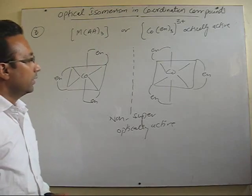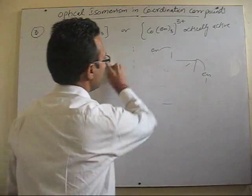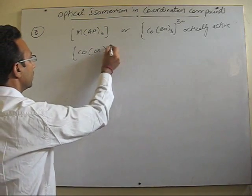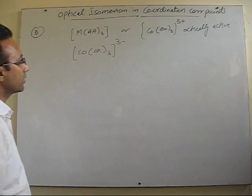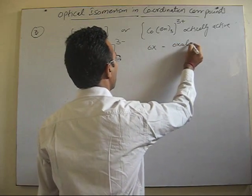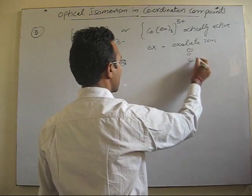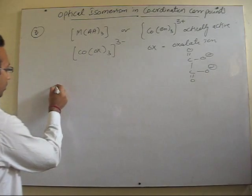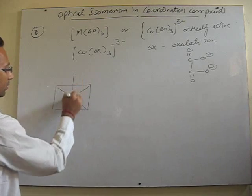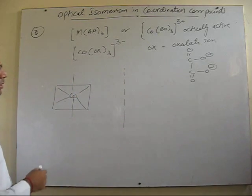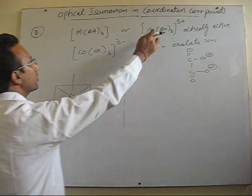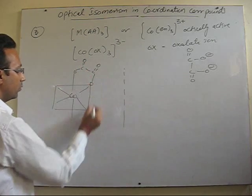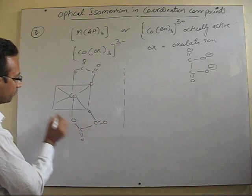Let's take one more example of this category. Another complex of cobalt with one anionic ligand — cobalt oxalate in the +3 oxidation state. Oxalate is acting as a bidentate ligand, and both donor atoms are oxygen. This is the only one structure for this compound, and we'll draw its mirror image.